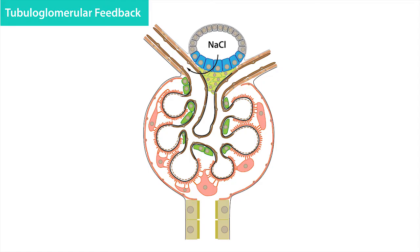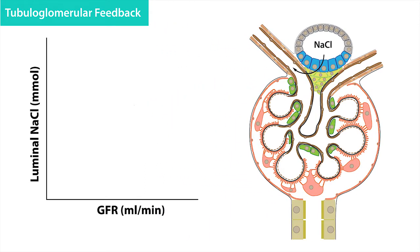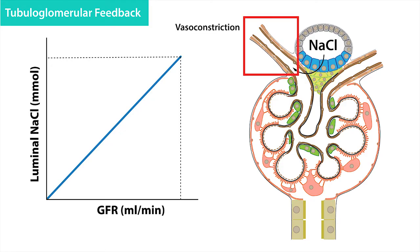In previous lessons we learned that the filtered load of sodium chloride increases linearly as GFR increases, which means delivery of sodium chloride to the macula densa cells also increases. When this happens, the macula densa cells signal the afferent arterioles, which leads to vasoconstriction of the afferent arterioles. This vasoconstriction results in a reduction of the glomerular filtration rate and a corresponding reduction in sodium chloride delivery to the macula densa cells.